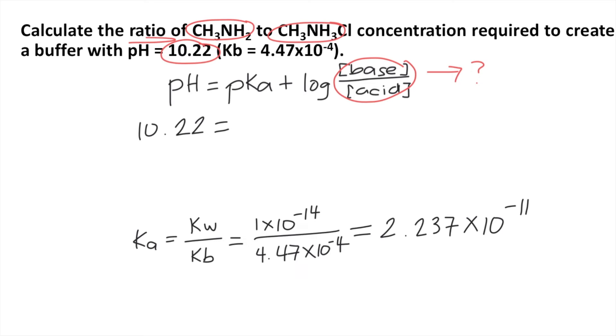In the Henderson-Hasselbalch equation, we need the pKa. We know that pKa is equal to the negative log of the Ka. So we will get negative log of 2.237 times 10 to the negative 11, and that is approximately equal to 10.65.